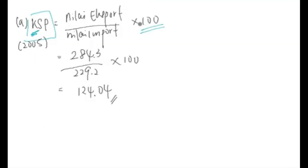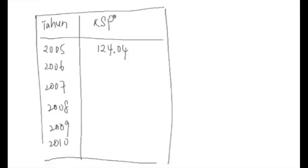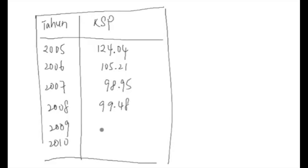Berdasarkan rumus yang telah diberikan, kita nak kira untuk tahun 2006 hingga tahun 2010. Jawapan untuk tahun 2006 ialah 105.21. Sambung: 98.95, kemudian 99.48, kemudian 98.12, dan yang terakhir 96.27.